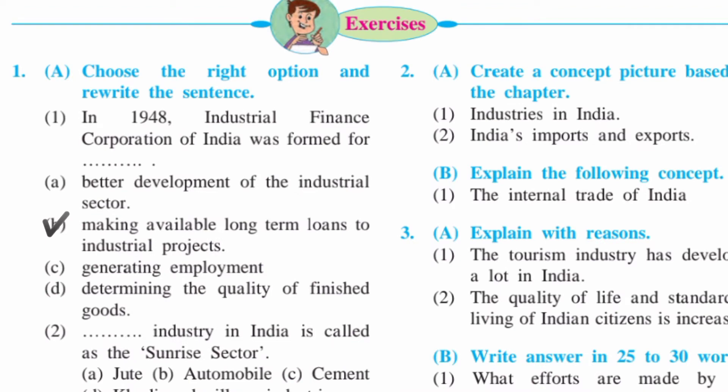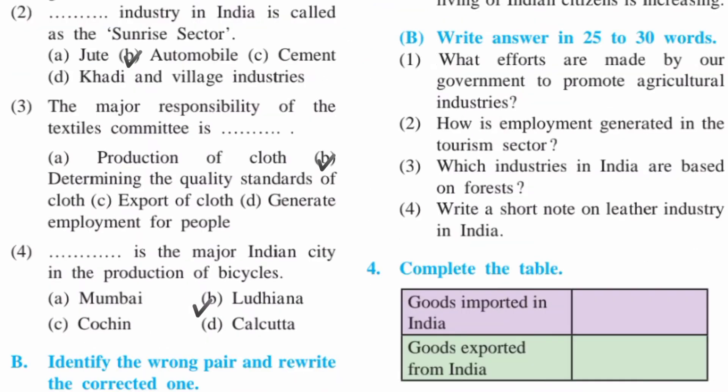Question number one: Choose the right option and rewrite the sentence. First one: In 1948, the Industrial Finance Corporation of India was formed for — answer B: making available long-term loans to industrial projects. Second: Dash industry in India is called the sunrise sector — answer is automobile.